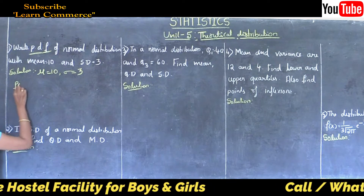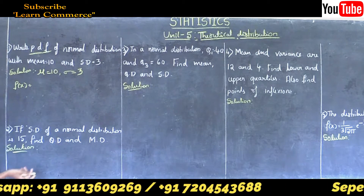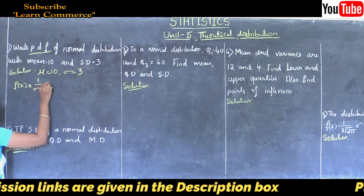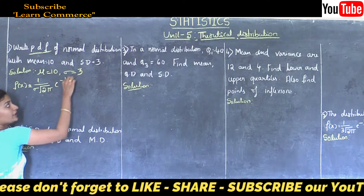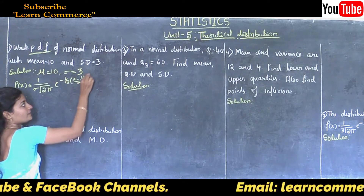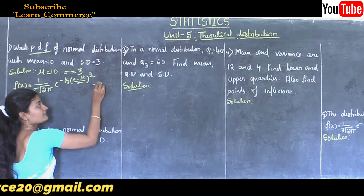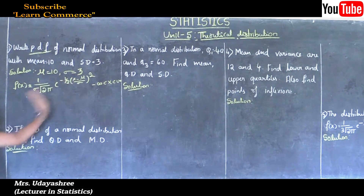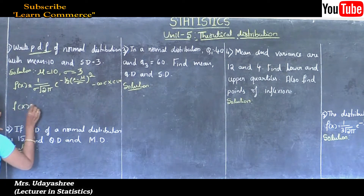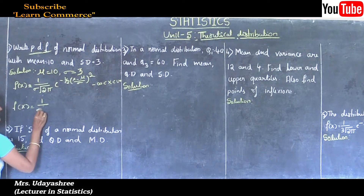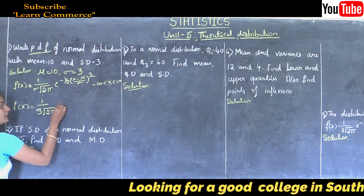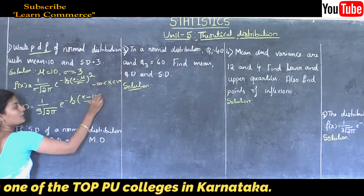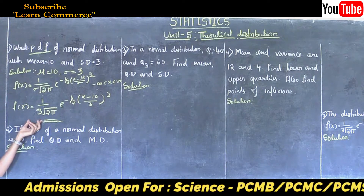The probability density function is denoted by f(x). The probability density function of normal distribution is: f(x) = 1 / (sigma × sqrt(2π)) × e^(−1/2 × ((x − μ)/σ)²), where x takes values from minus infinity to plus infinity. Substituting mu = 10 and sigma = 3: f(x) = 1 / (3 × sqrt(2π)) × e^(−1/2 × ((x − 10)/3)²).